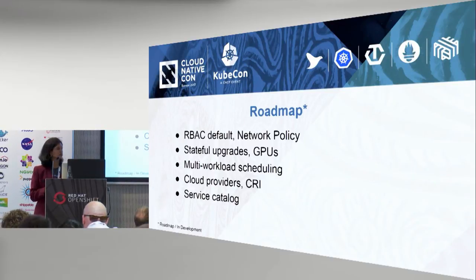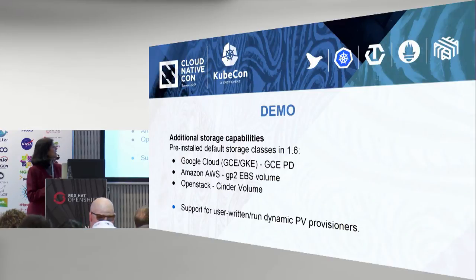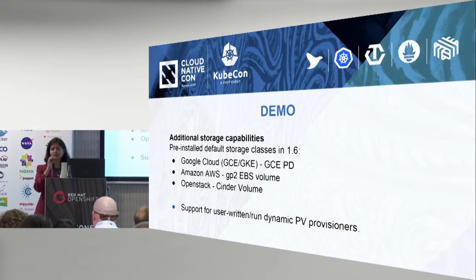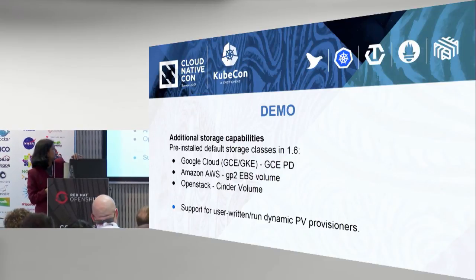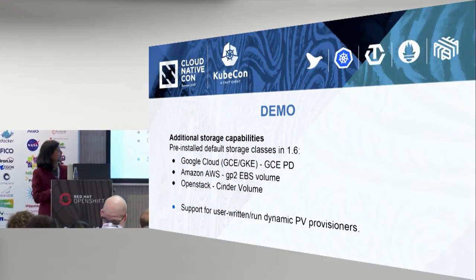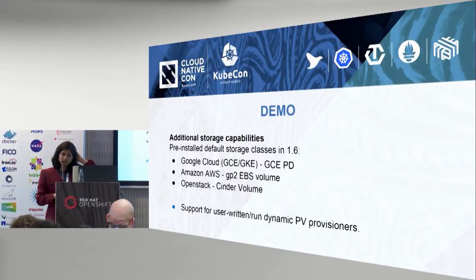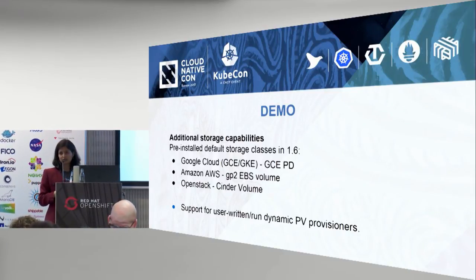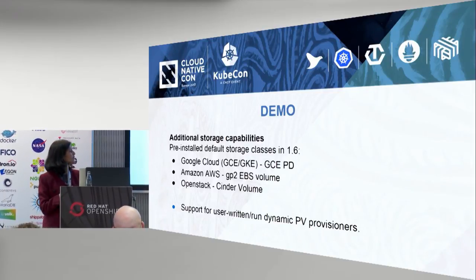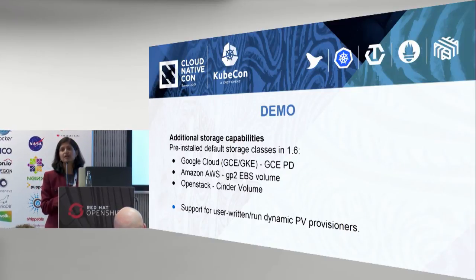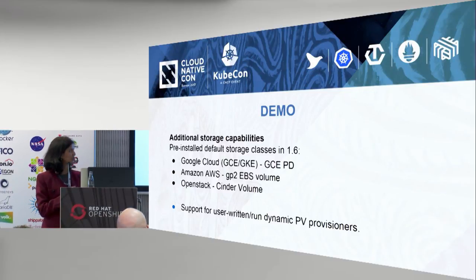There are a number of sensible defaults that have been set for the different cloud providers. In Google Cloud it's GCEPD, in Amazon it's an EBS volume, and so forth for OpenStack and others. There are also a number of other storage features — this has been a big release for moving storage forward, including support for user-written and user-run dynamic PV provisioners, as well as a number of third-party plugins.